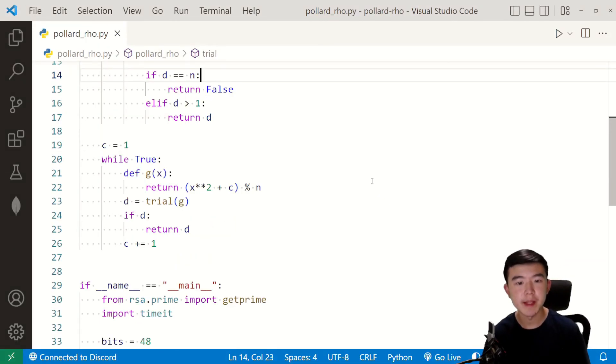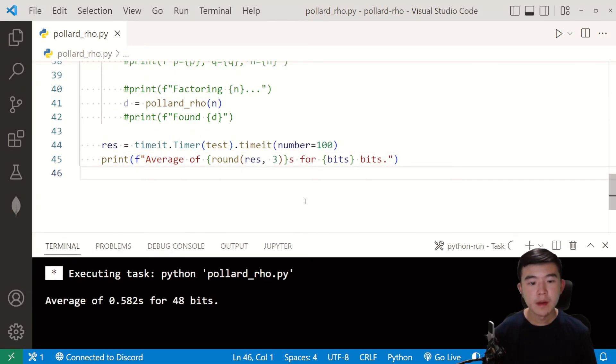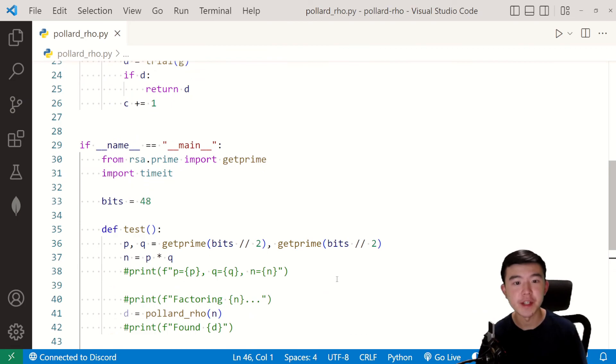So I wrote some code to implement this, and I also wrote a little benchmark down here. We can run it. And we can see that it takes on average less than a second for factoring 48-bit integers. If we wanted to factor bigger numbers, we'd have to use more advanced techniques like the general number field sieve. But for now, Pollard's rho algorithm is pretty good, and it's way better than brute force division.